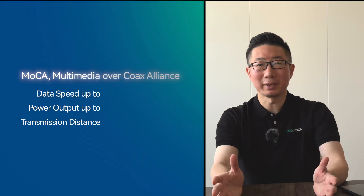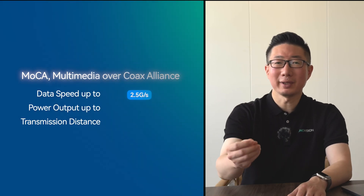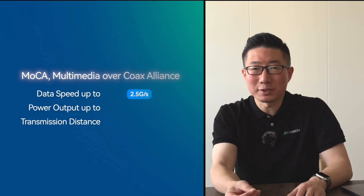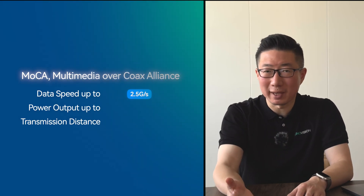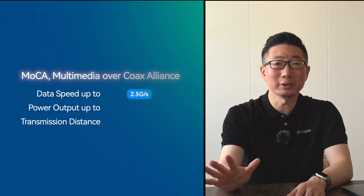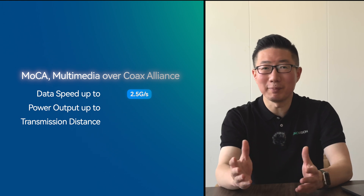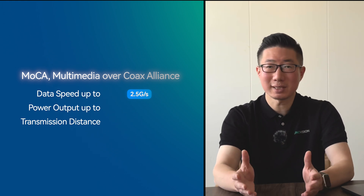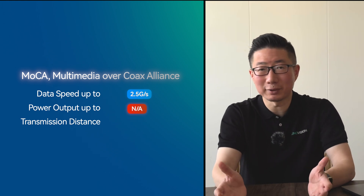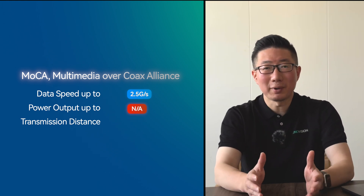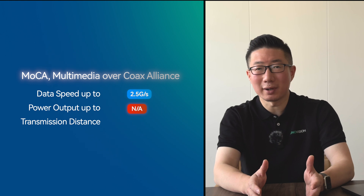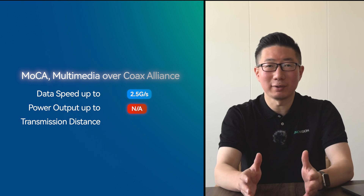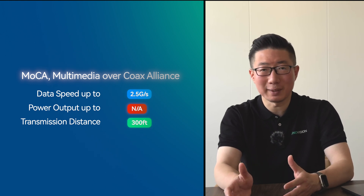Compared to the other two technologies, the biggest advantage is how it solves the problem of remote power supply and great distance range coverage. MoCA delivers speeds up to 2.5 Gbps with ultra-low latency, making it ideal for home networking. However, it doesn't support power transmission.